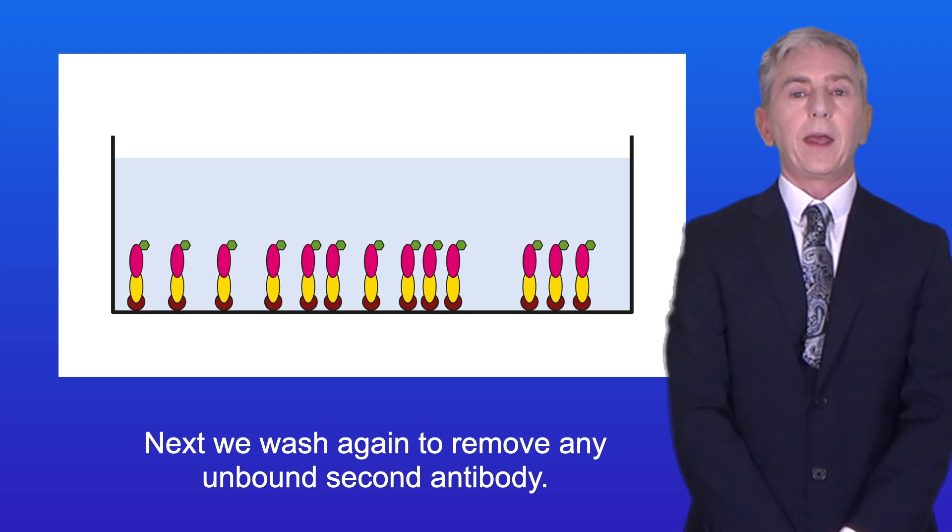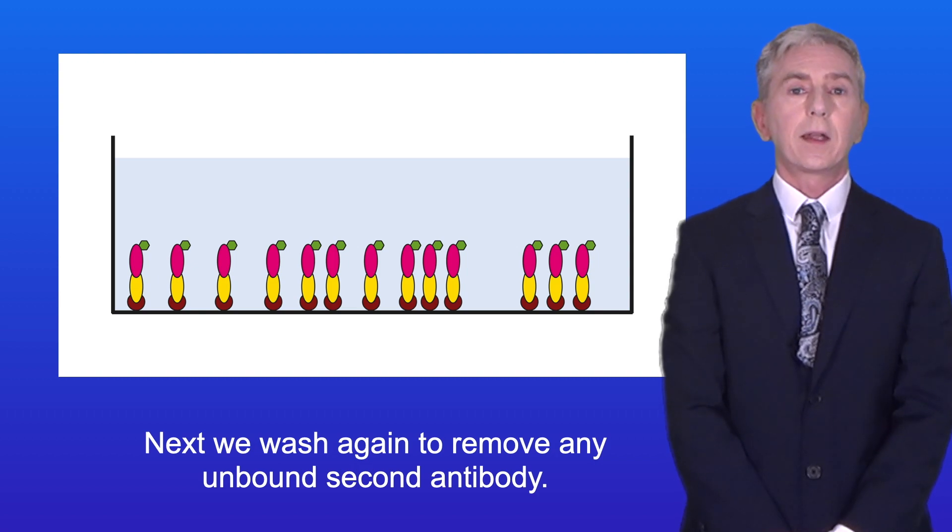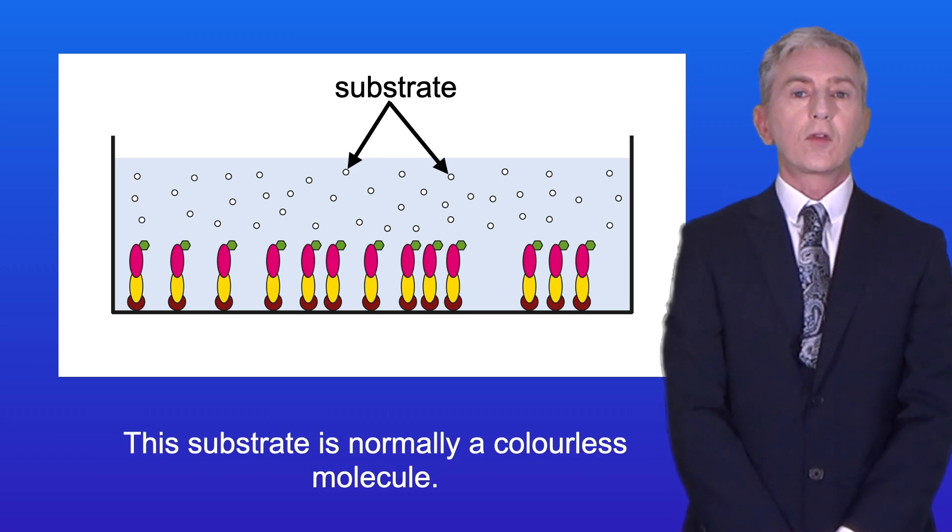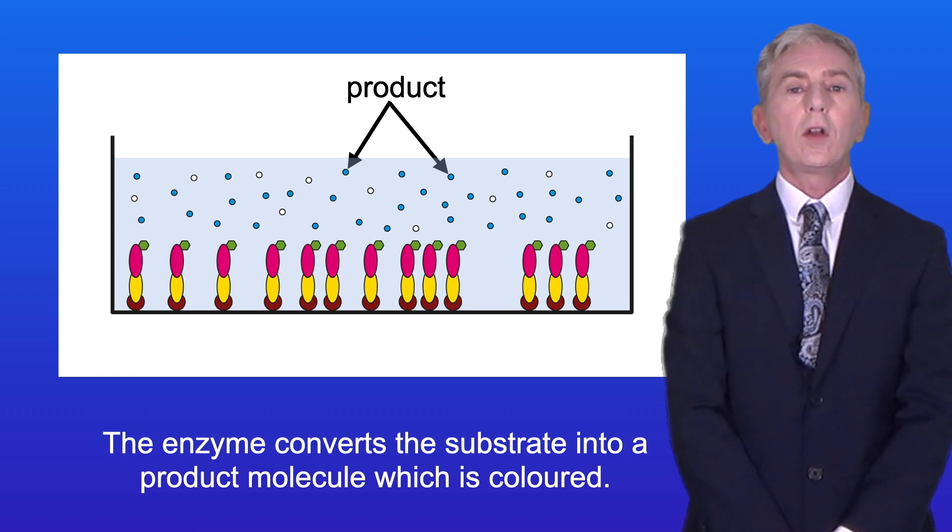Next, we wash again to remove any unbound second antibody. Now we add the substrate for the enzyme. This substrate is normally a colorless molecule. The enzyme converts the substrate into a product molecule which is colored.